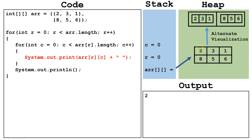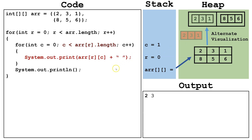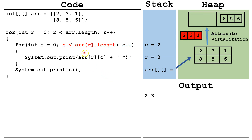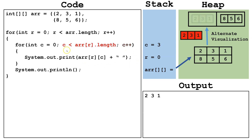Row zero column zero is two, which goes to our output. We increment c by one, check again, and since one is less than three, we print row zero column one, which is three. We increment c to two, check again, and since two is less than three, we print row zero column two — counting zero, one, two — which is one. We increment c to three, check is three less than three — it is not — so we terminate this inner loop.